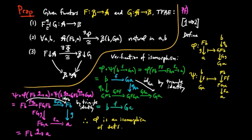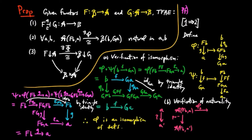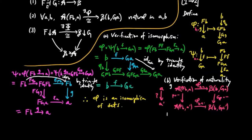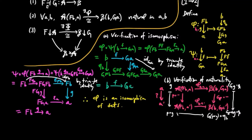We have left to show that phi is natural in the components A and B. If we're given an A-morphism P, we need to verify the following commutes, where the left map is post-composition by P and the right map is post-composition by GP. Given an A-morphism G from FB to A, we take the low road and end up with G ∘ P ∘ G ∘ eta_B. The high road gives us G ∘ P ∘ G ∘ G ∘ eta_B. Then since functors preserve composition, we have equality.